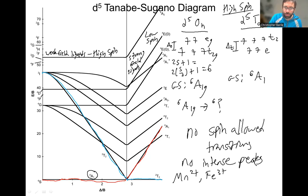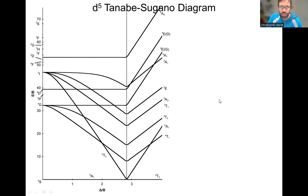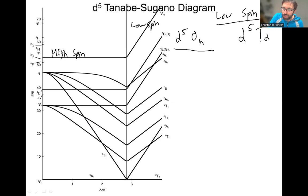If it's low spin, then you're going to talk about the right side of the diagram. Let's do that next. This is high spin on the left, low spin on the right. We are going to be talking about low spin. We're on the low spin side of the diagram, but this is going to be applicable again for D5 octahedral complexes and also D5 tetrahedral complexes.